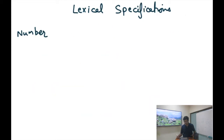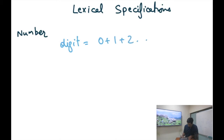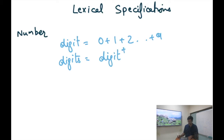A number is different from an integer because it can also have a decimal point in the middle, but only a single decimal point — it could also have zero decimal points. So a number is a generalization over an integer. I would define 'digit' as 0 through 9, and then 'digits' as one or more occurrences of digit — digit plus.